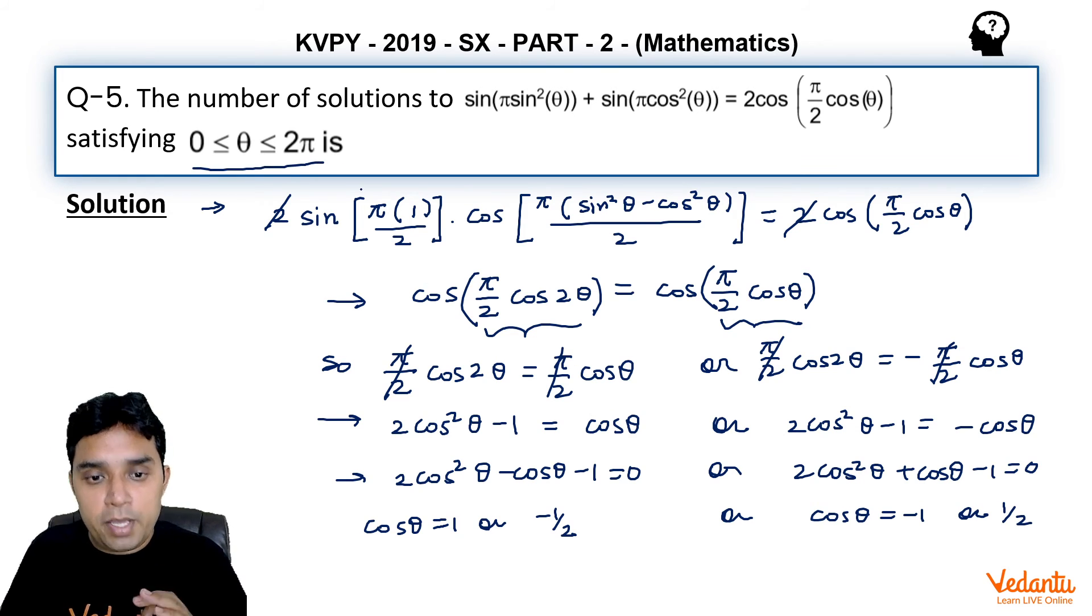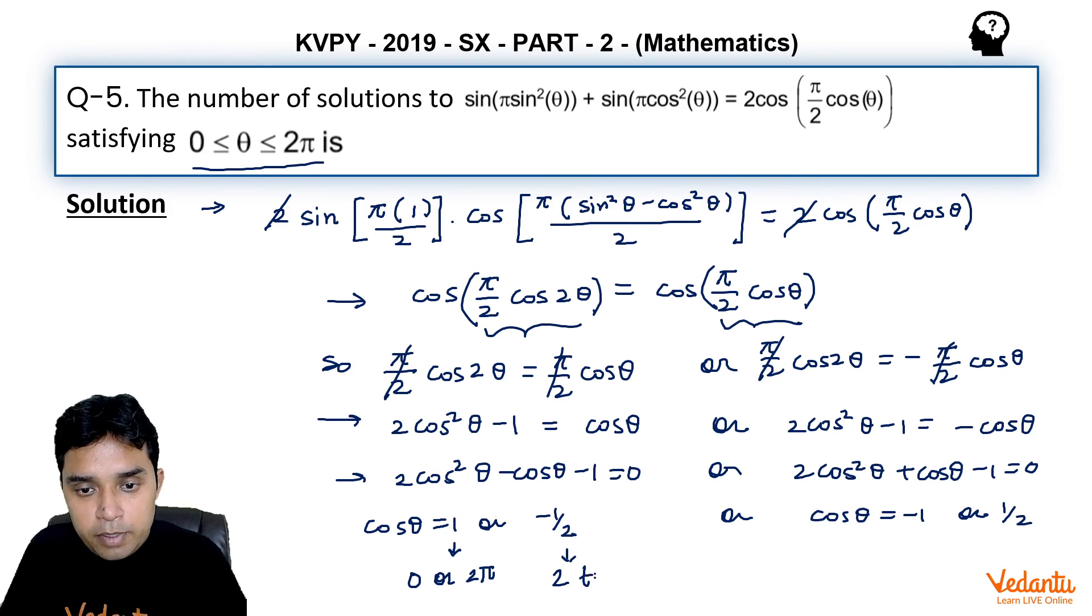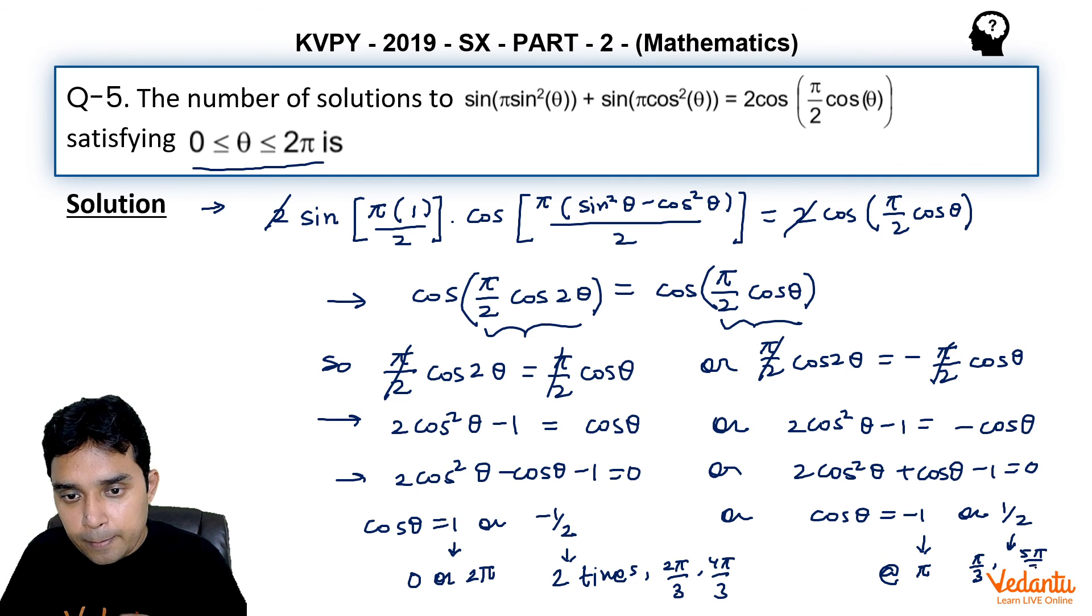Now in this interval 0 to 2π, cosθ equal to 1 will give one value at 0 or 2π, whereas -1/2 will occur once in second quadrant and once in third quadrant. That is at 2π/3 and 4π/3 where cosθ will be -1/2. Similarly, cosθ = 1/2 will be when θ equals either 60 degrees, that is π/3, or 300 degrees, that is 5π/3.